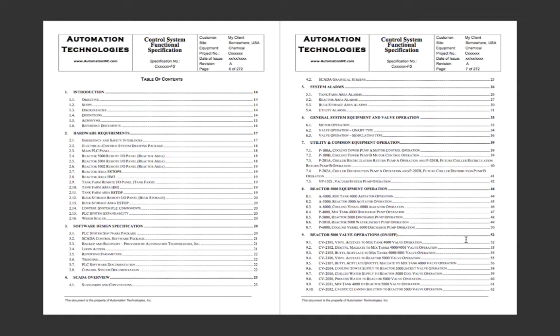All functional specifications don't have to be a massive document. As we see right here, this could be a fairly large document even though it's a sample generic document. What we want to see is the introduction area. We like to put information about the hardware, about the panels being put in, about some of the e-stops and locations. This doesn't necessarily have to be in every system.